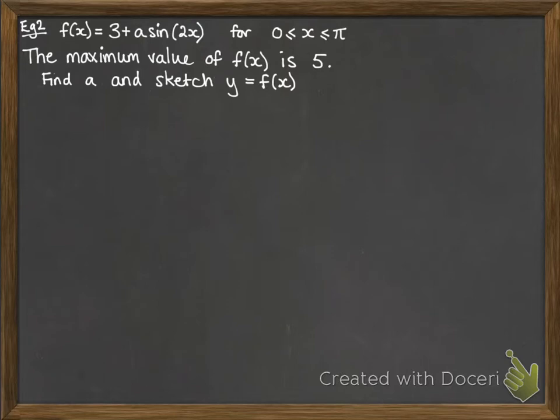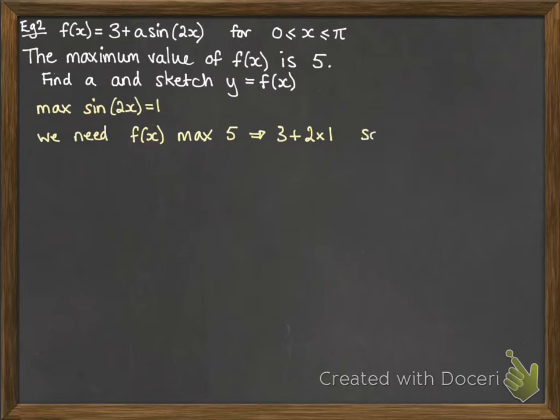Example number 2. We've got 3 plus a sine 2x within a range of 0 to pi. We know that the maximum value of this function is 5. We want to find a and then sketch the graph. Since the maximum of sine can only be 1, then we have to do something that makes our maximum be 5. And that means doing 3 plus 2 times 1. Since sine has to be 1, 3 is fixed as well. The a must be 2.